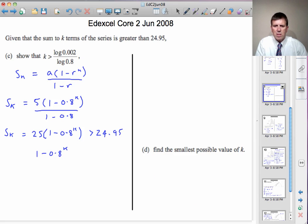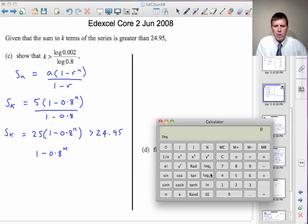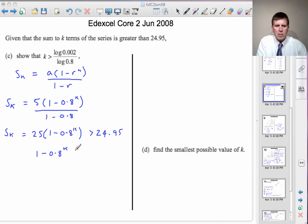So let's have a calculator and see what we get for 24.95 divided by 25. It's 0.998. So that's greater than 0.998.